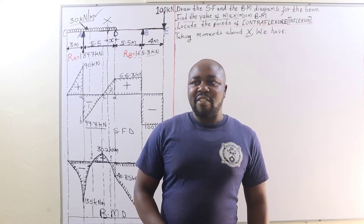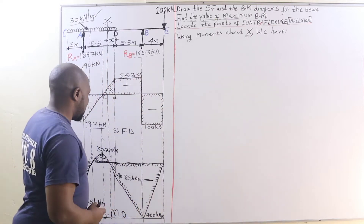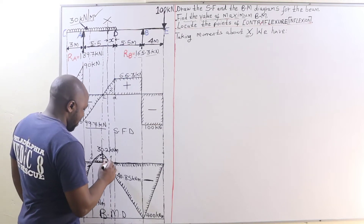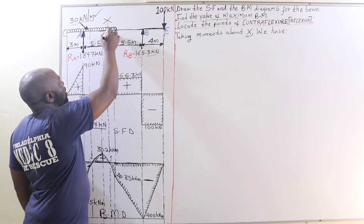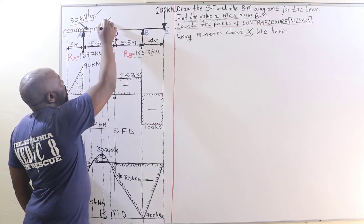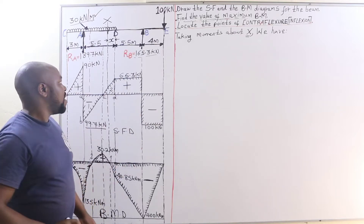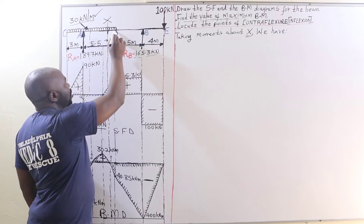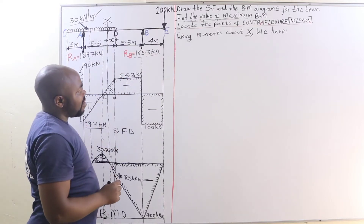Now, how do we locate a point of contra flexure? We will start with locating the first point by plotting a line that takes us to the loaded beam. We find that at this point, which we call x, is the point of contra flexure on our loaded beam, having a span of x meters from point D.